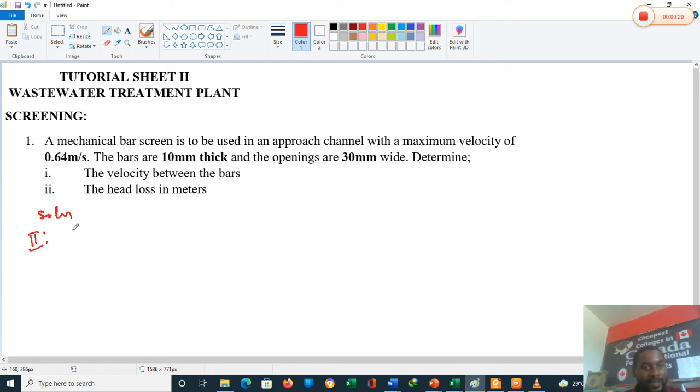Head loss, frictional head loss, in this case HF, is given as velocity between bars squared minus approach velocity squared, all that over two times acceleration due to gravity, all these times one over 0.7. One over 0.7 is the constant for frictional head loss. So we have this being equal to